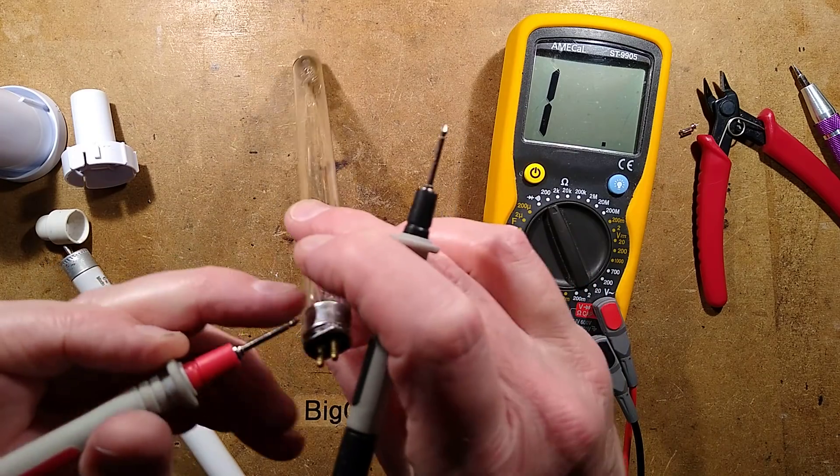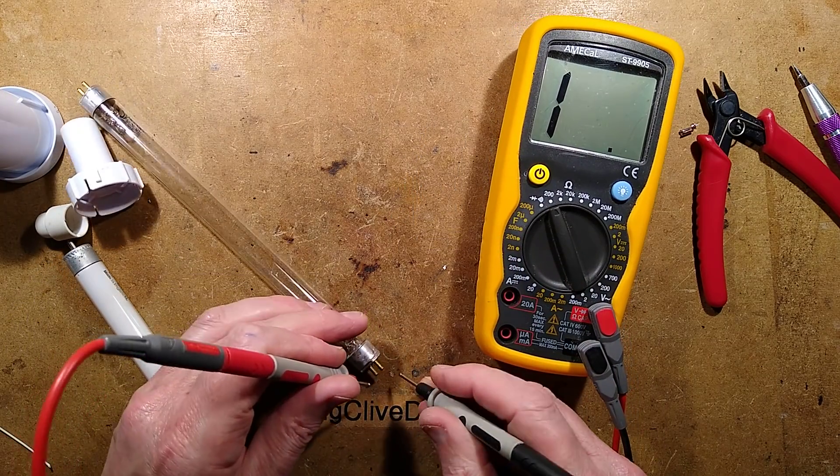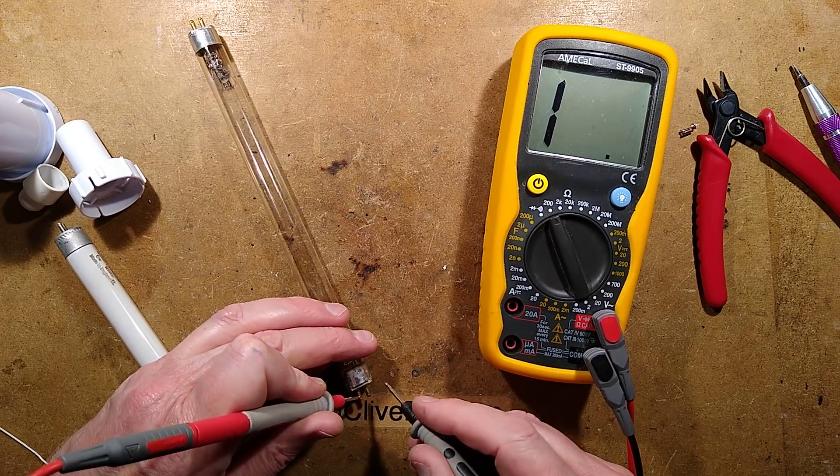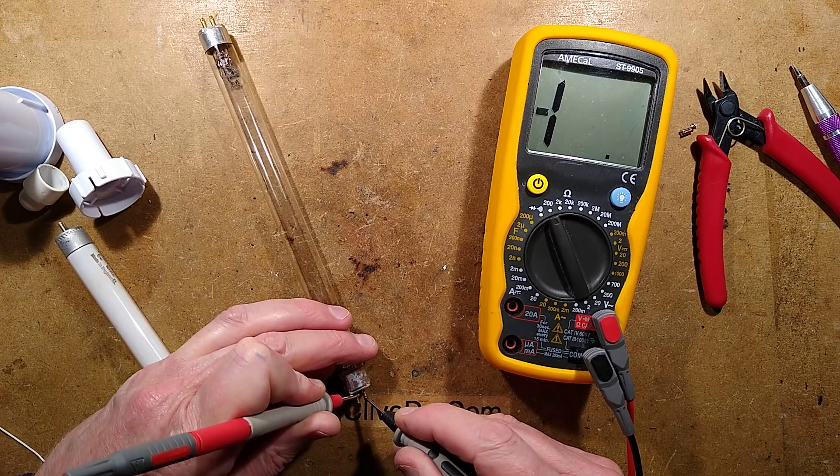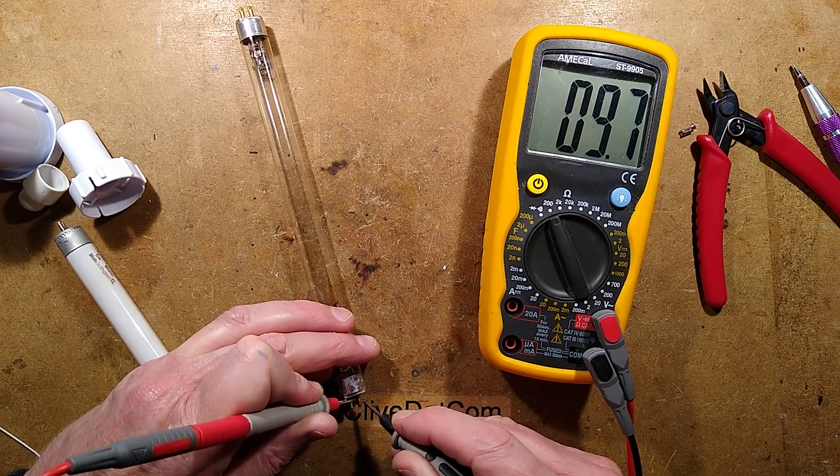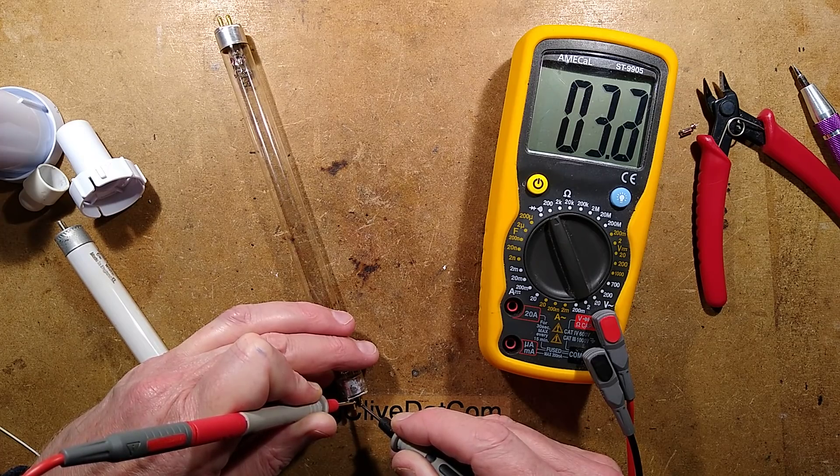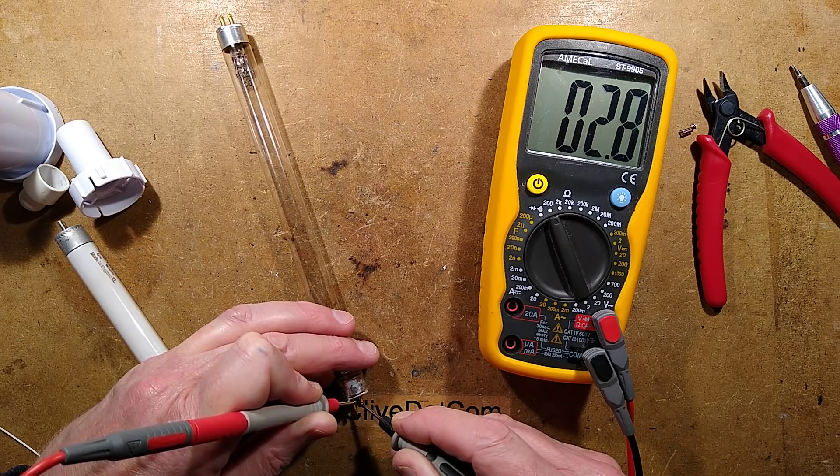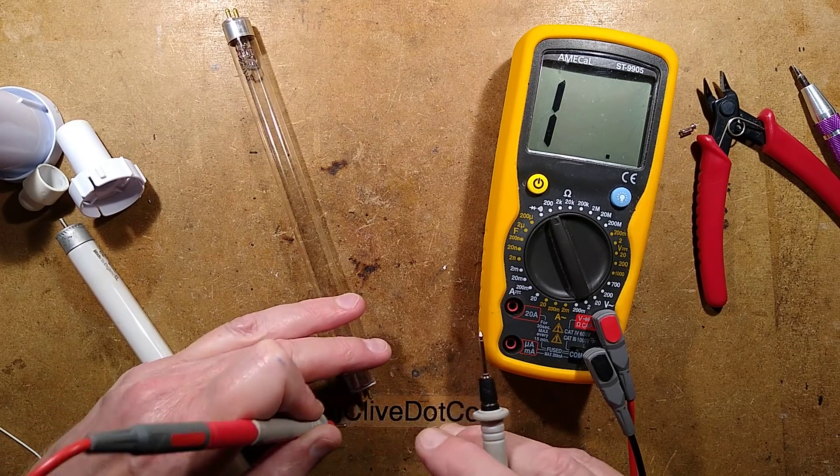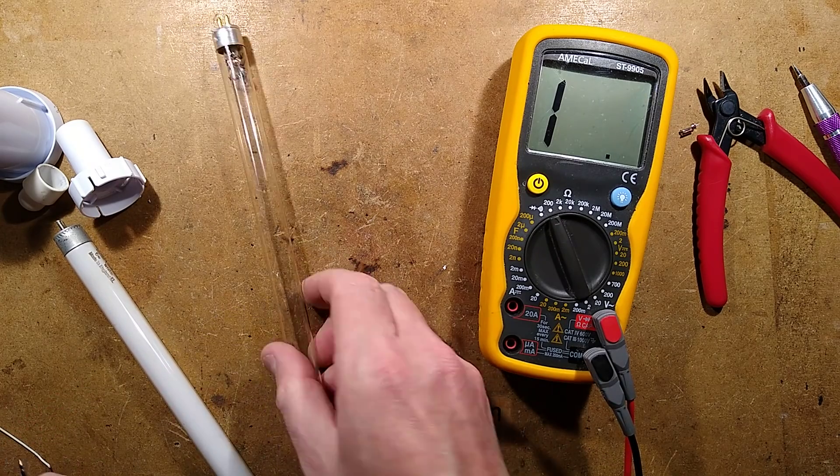This tube is not standard. If I put the meter across the ends of these, it displays, if I can keep the probes on, it's only about 2 or 3 ohms.